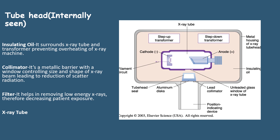The collimator is a metallic barrier. Its function is to control the shape and size of the x-ray beam so that there is lesser scatter radiation. This metallic barrier has a window. As we can see, this is the collimator and this is the window. When the rays pass through this, it controls the shape and size so that there is lesser scatter radiation.